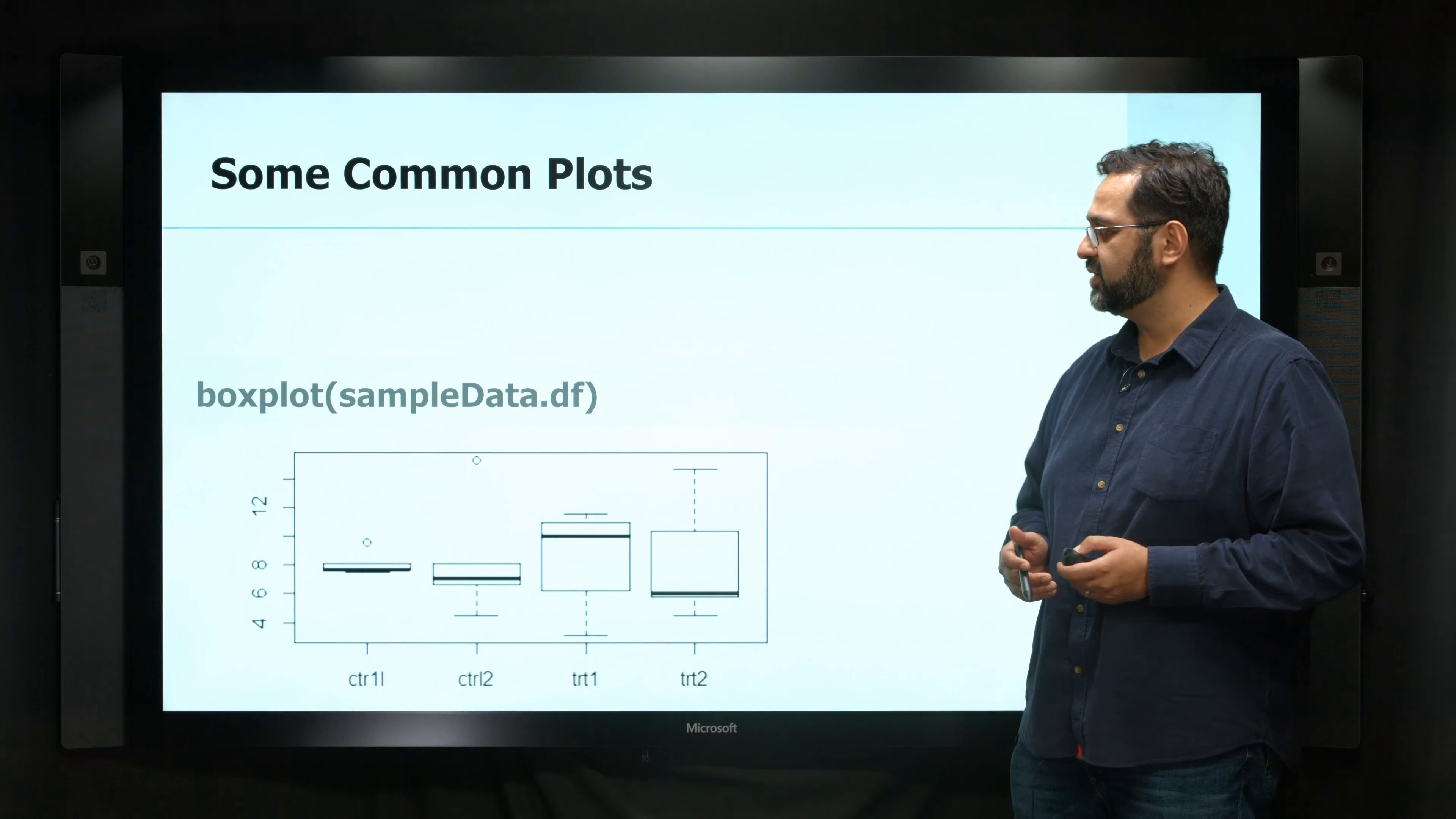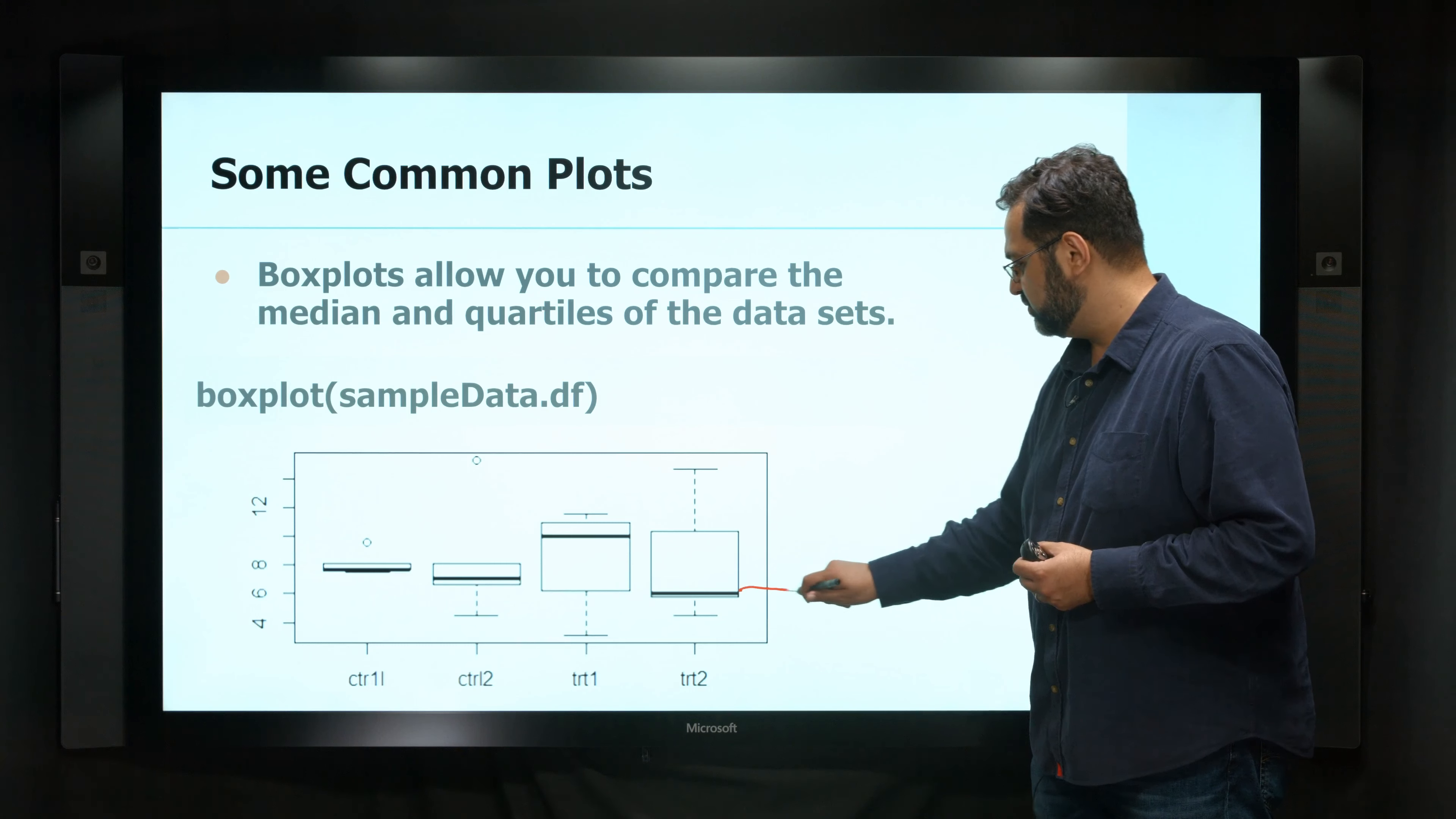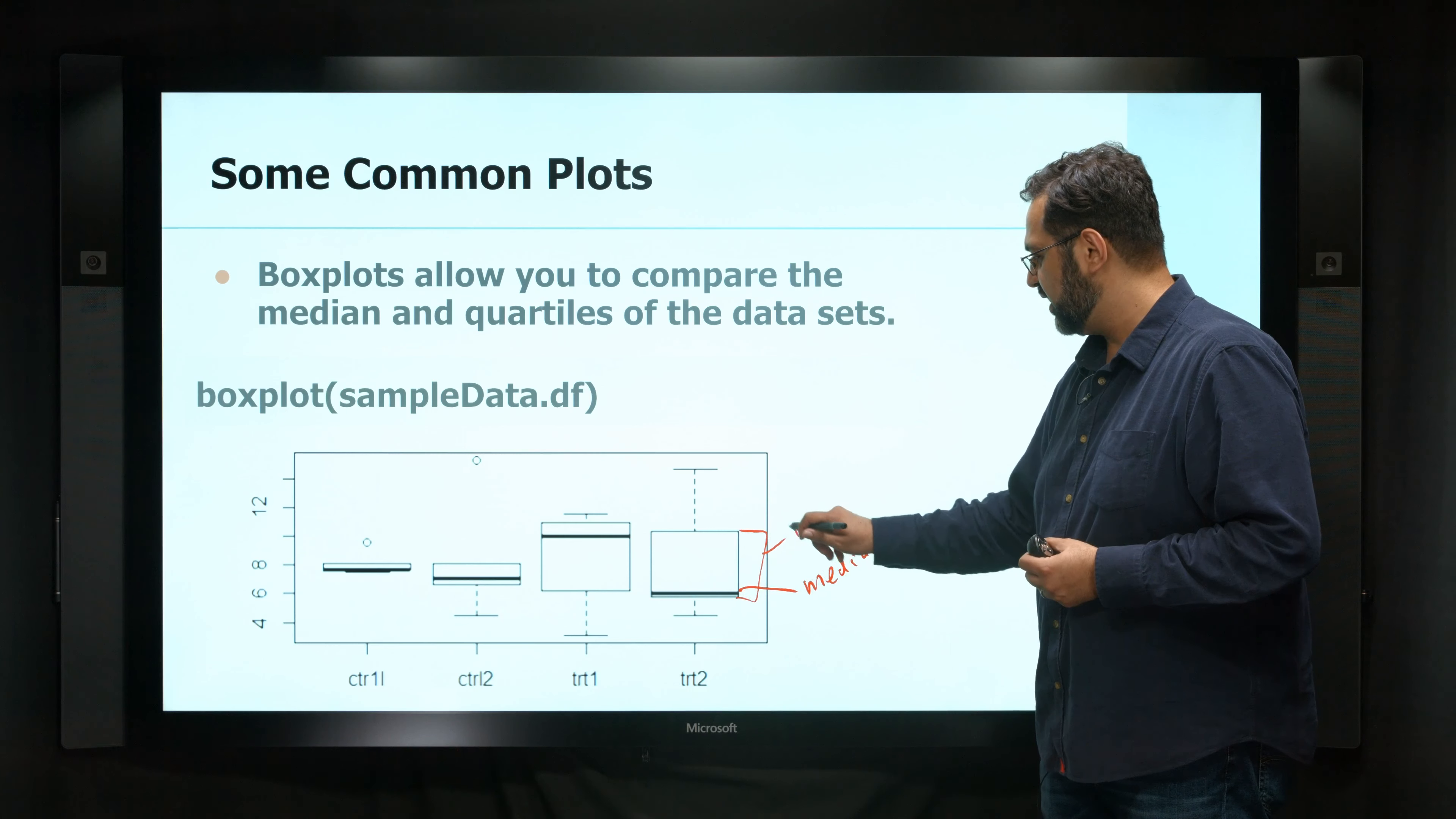Another one is a box plot. Box plots are really good to look at the median and quartile ranges. So here is your median in your data set. And this is your interquartile range, the IQR.